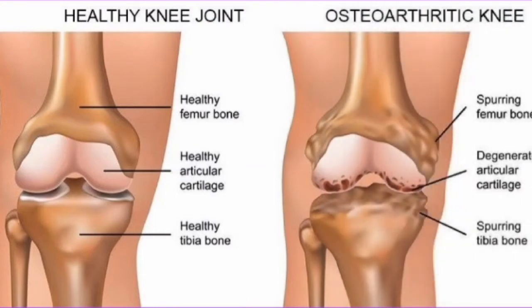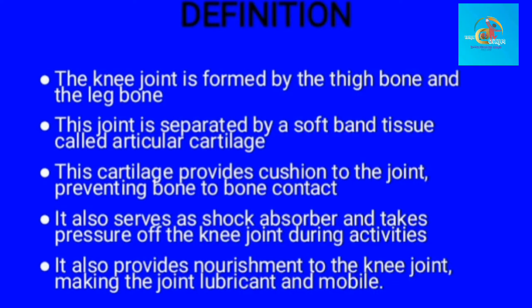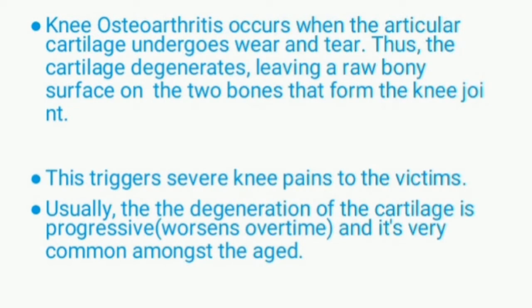How can we determine an unhealthy knee joint? In a healthy knee joint — just look at the image on the screen — it is more obvious. We are seeing an osteoarthritic knee. So what then is an osteoarthritic knee? The knee joint is formed by the thigh bone and the leg bone. This joint is separated by a soft band of tissue called articular cartilage, which provides cushion to the joints, preventing bone-to-bone contact. It also serves as a shock absorber and takes pressure off the knee joint during activities. Knee osteoarthritis occurs when the articular cartilage undergoes wear and tear — thus the cartilage degenerates.